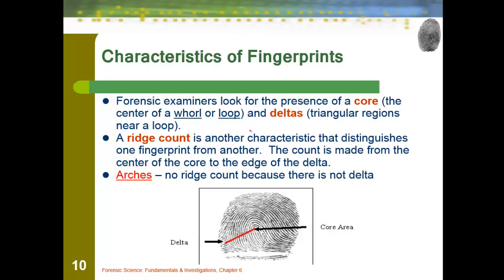A couple of things we want to observe: the first is the ridge count. When we look at the core — the center of a loop or whorl — there's no core for an arch. So just the loop or the whorl, and then to the delta. The ridge count is the number of ridges from the core to the delta, almost like tree rings, counted between those two points. Arches don't have a ridge count because there are no deltas, so you can't go from delta to core. That's another unique identifying part of our fingerprints.